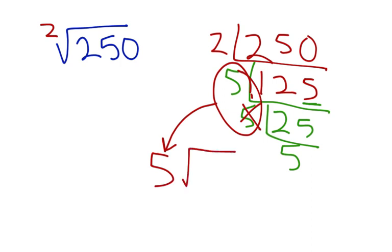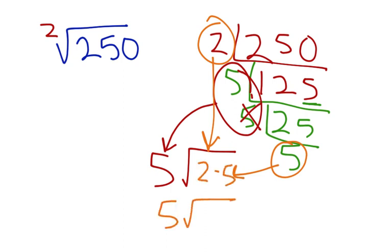So we've got 5 left inside the root, we've got the 2 still, and the 5, so that's 2 times 5, which means your answer is 5 root 10.